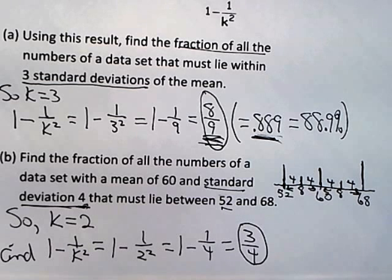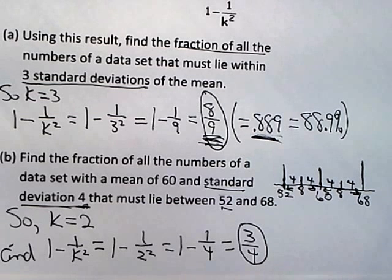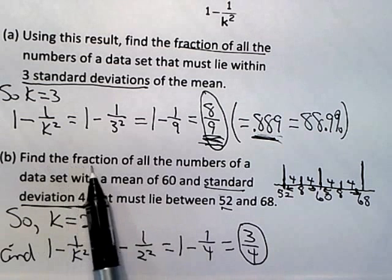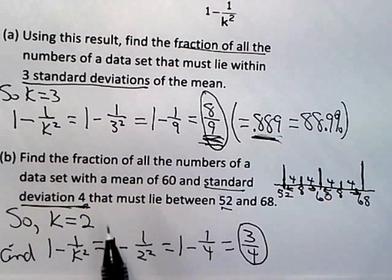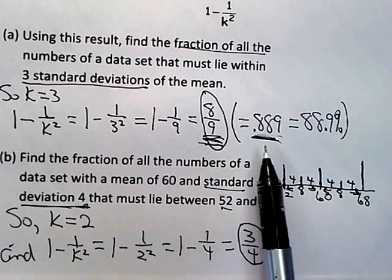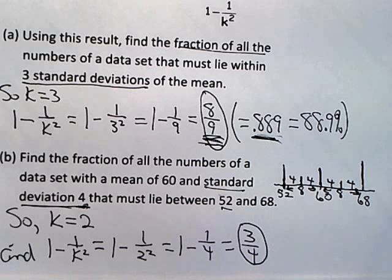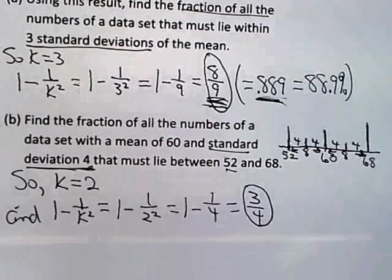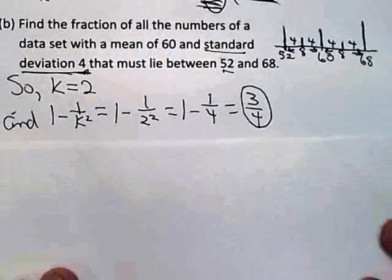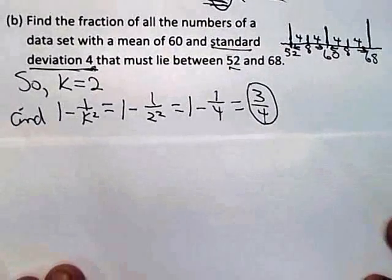You could also express that as a decimal — 0.75 — or 75 percent. If they use the word probability you'll likely want the answer as a decimal, but keep that in mind without doing it every time. Now for the last problem, Part C.